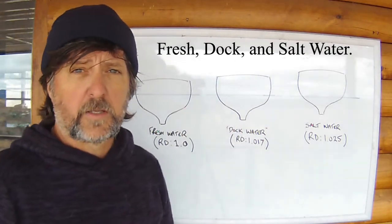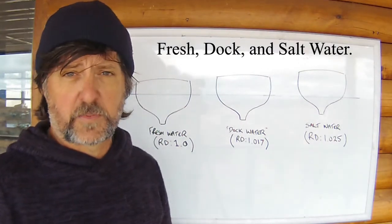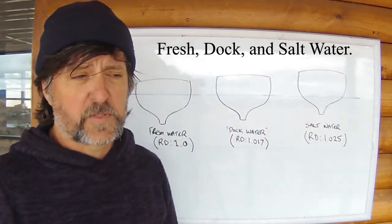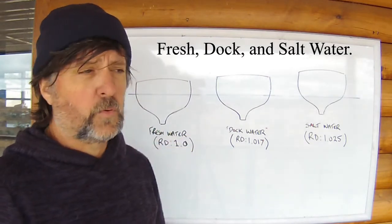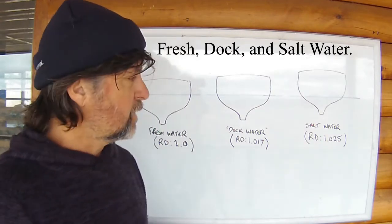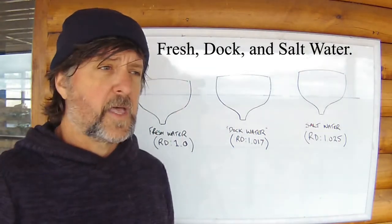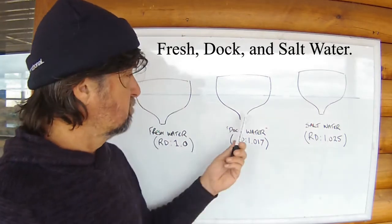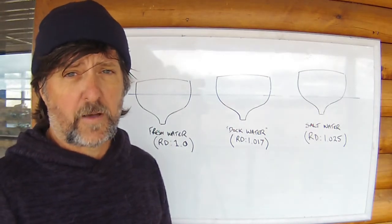Somewhere in between is a thing called dock water. Dock water is pretty specific to ships that carry cargo — ships that have a load line — and is somewhere between fresh and salt water. If you're loading cargo not too far up a river, in an estuarine environment where fresh and salt water mix, that results in a relative density somewhere between 1 and 1.025. Any relative density in between is referred to as dock water, and the vessel will float somewhere between those two draughts.